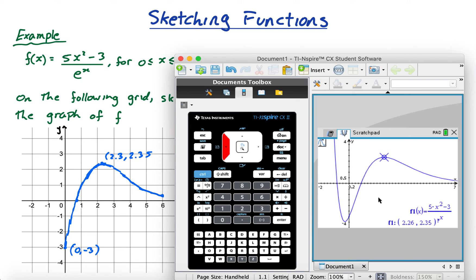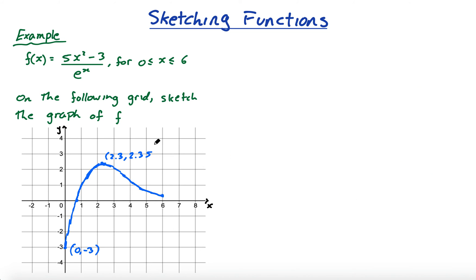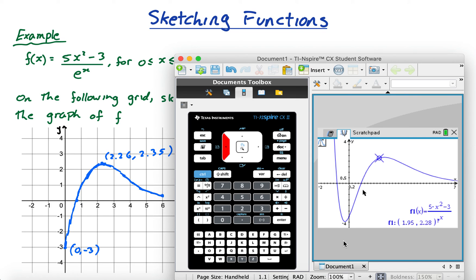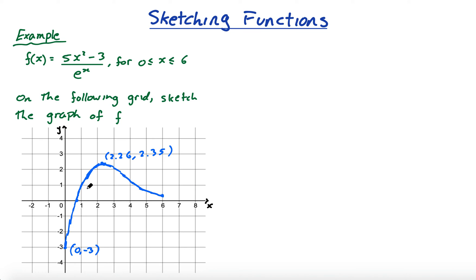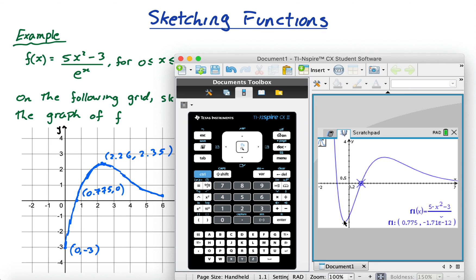So that's 2.3, 2.35... sorry, it was 2.26, I thought that was a bit strange. 2.26, 2.35. And then the 0 was at 0.775, so that's 0.775, 0. And the 6 is 6, 0.439.